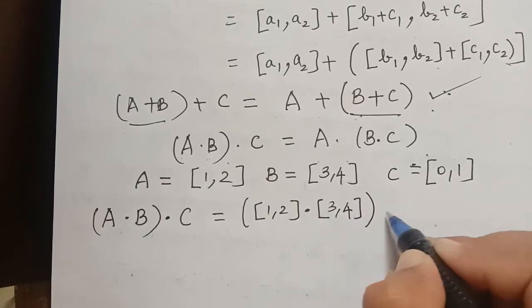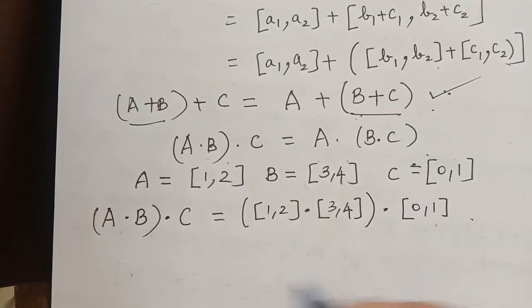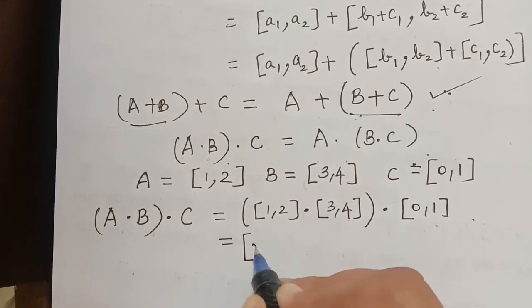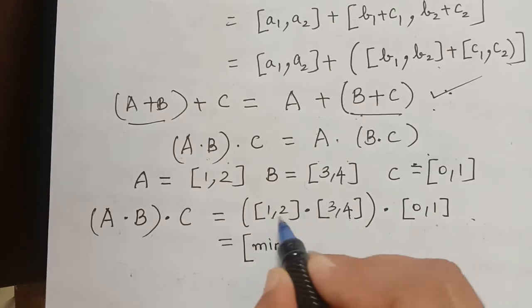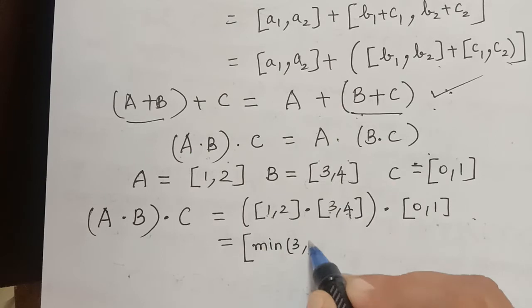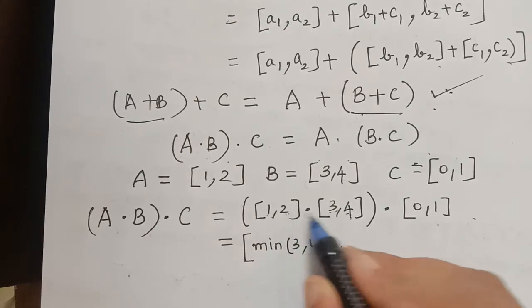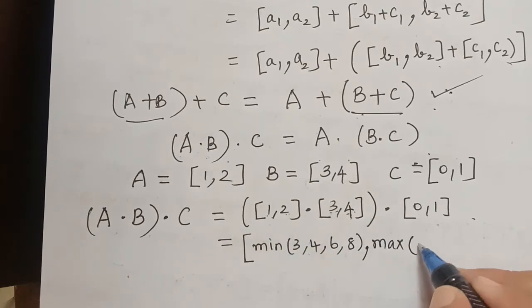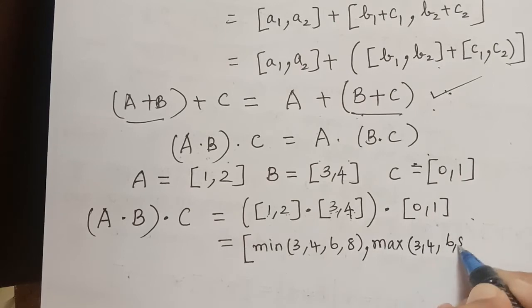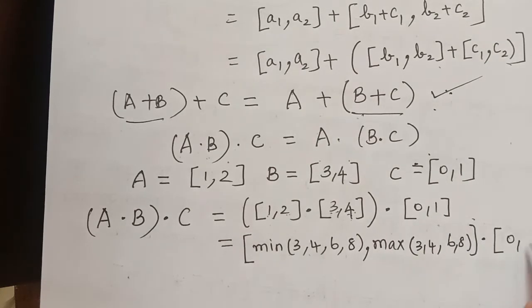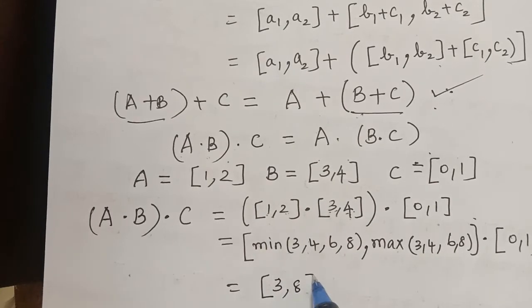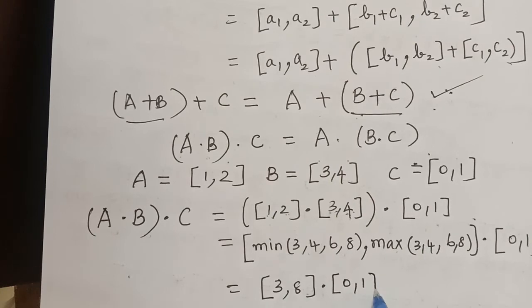So the left hand side is closed interval [1, 2] multiplied with closed interval [3, 4], and then multiplied with closed interval [0, 1]. By the definition, this gives closed interval [minimum of {1×3, 1×4, 2×3, 2×4}, maximum of {3, 4, 6, 8}], which is closed interval [3, 8], multiplied with closed interval [0, 1].